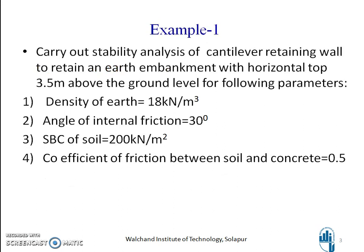Example: Carry out stability analysis of a cantilever retaining wall to retain an earth embankment with horizontal top 3.5 meters above the ground level for the following parameters. Density of soil: 18 kN/m³, angle of internal friction: 30 degrees, SBC (Q naught): 200 kN/m², and coefficient of friction between soil and concrete: 0.5.